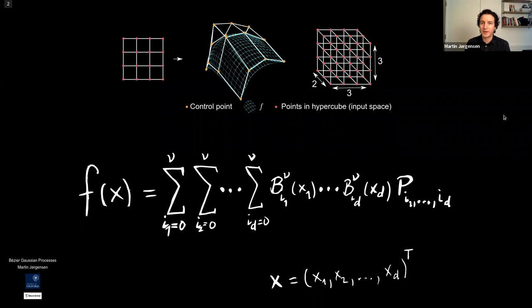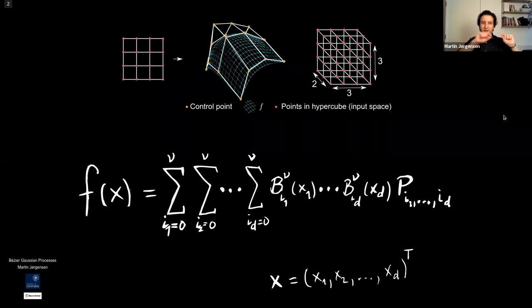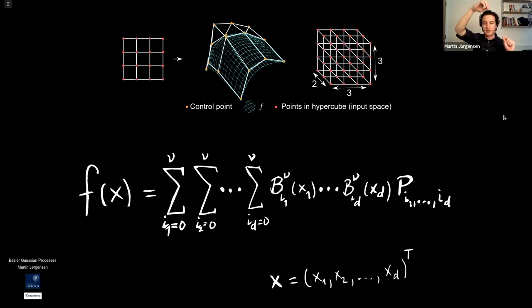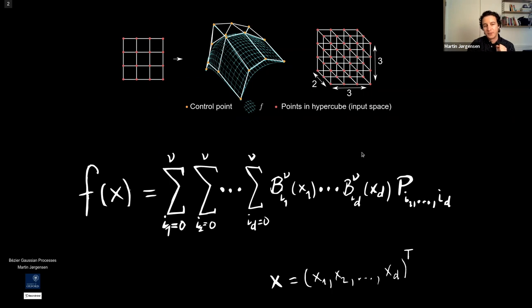Some of you might have heard about Bézier curves. It's a curve where you have two endpoints, and the order-one curve is the linear interpolation of these two. You can then introduce a third control point in the middle, where you can drag a parabola underneath it. So that is for one-dimensional input.